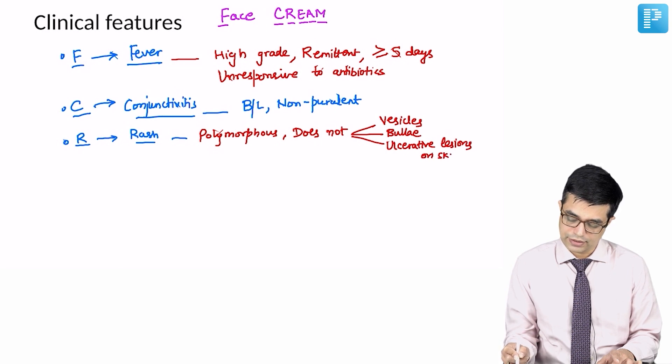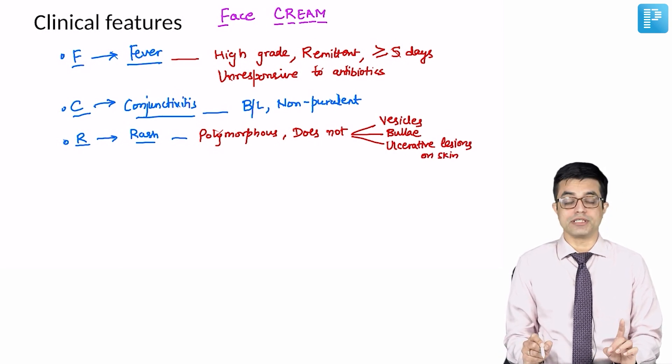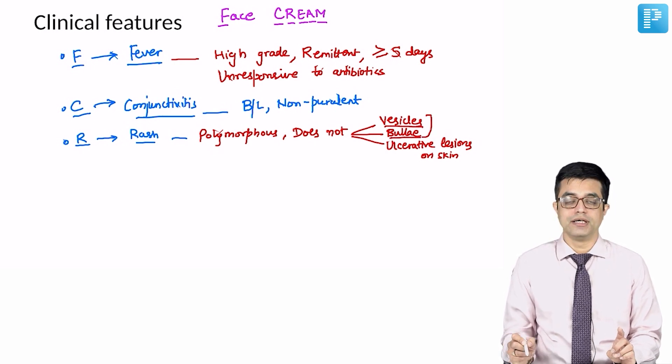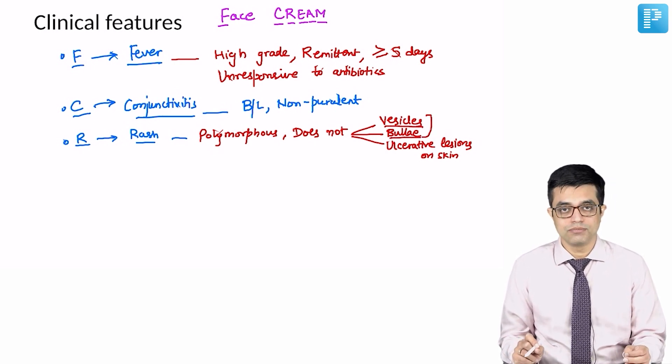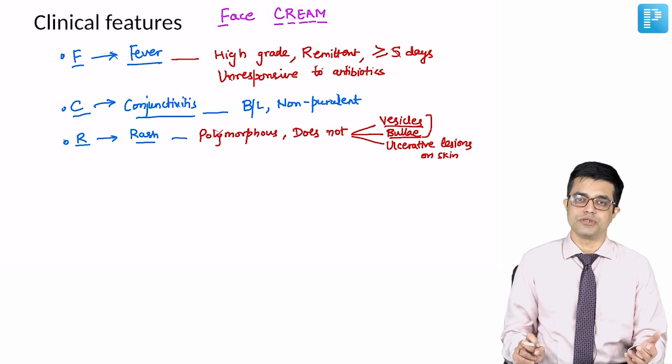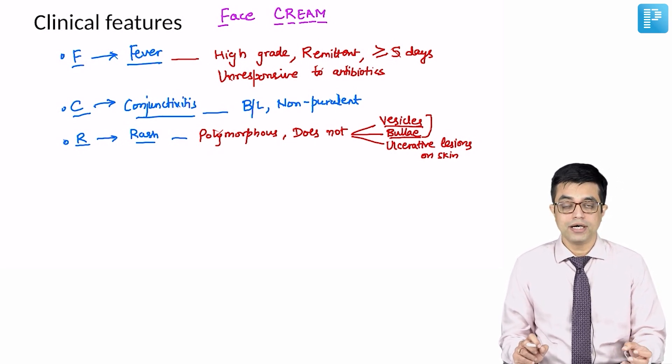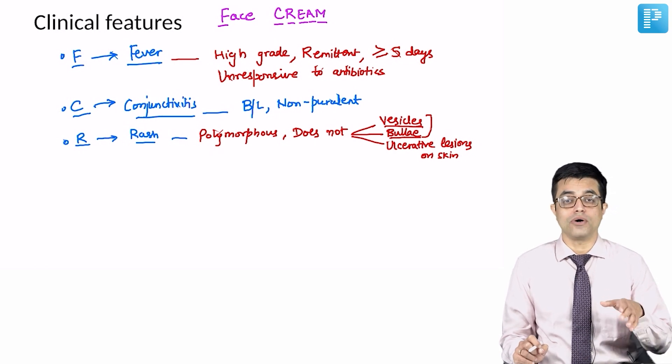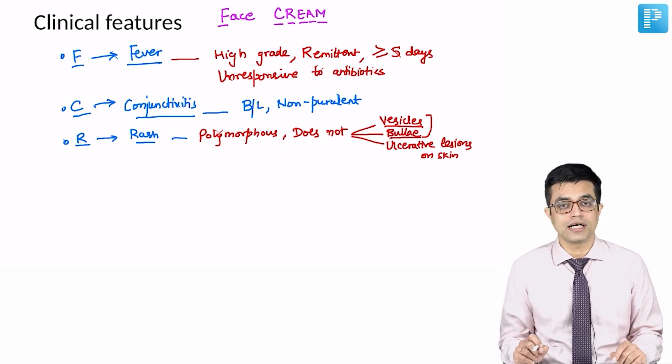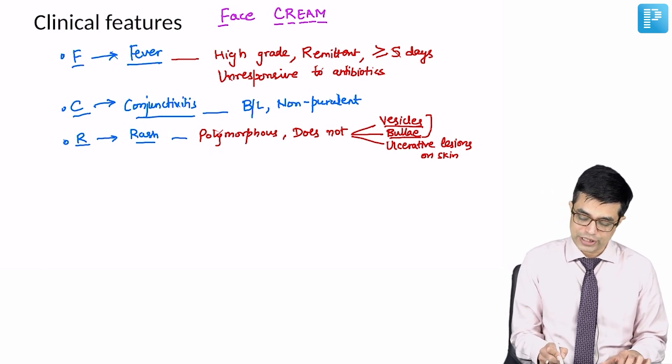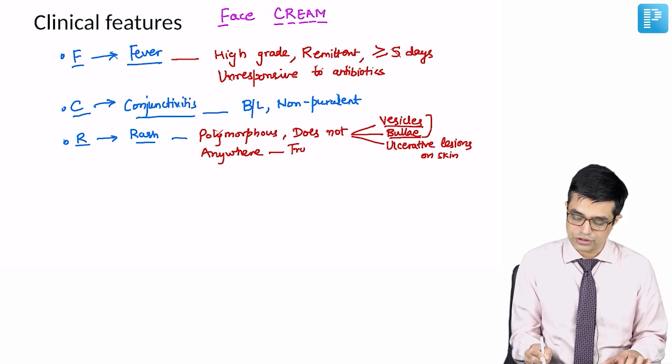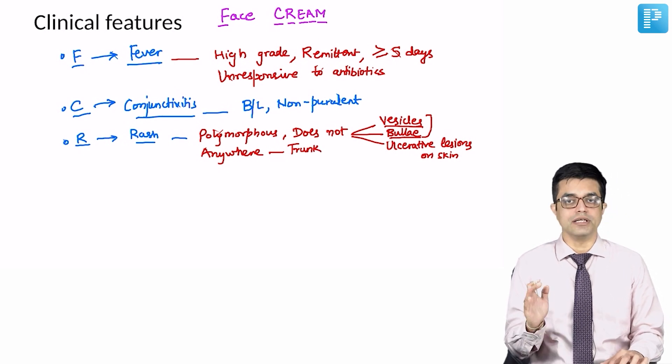Ulcers can occur in the oral mucosa but are not present on the skin. Particularly, vesicles and bullae should never be present. Presence of vesicles and bullae or purulent conjunctivitis should make you consider alternative diagnosis rather than Kawasaki disease. The rash is commonly seen on the truncal region.